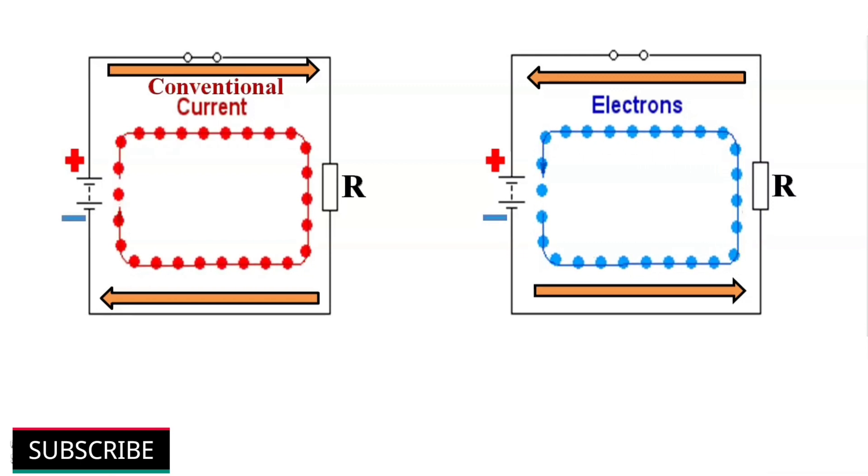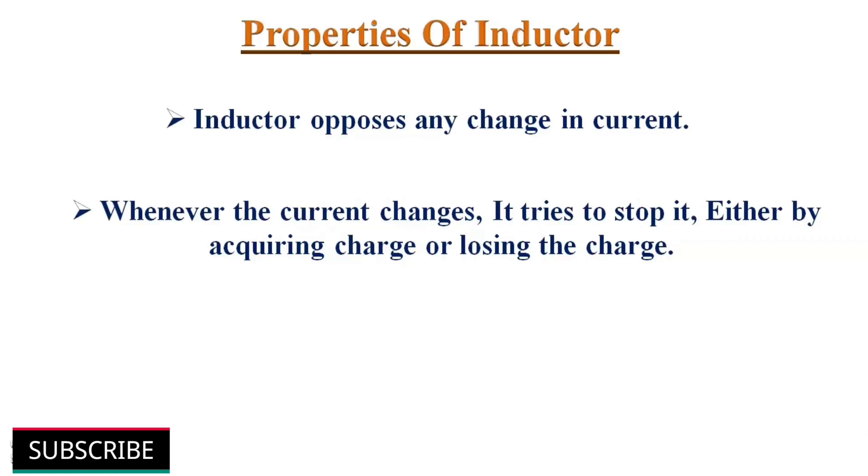The key property of an inductor is that it opposes any change in the current. Whenever the current changes, the inductor tries to stop it either by acquiring charge or losing charge in order to keep it the same as it was.